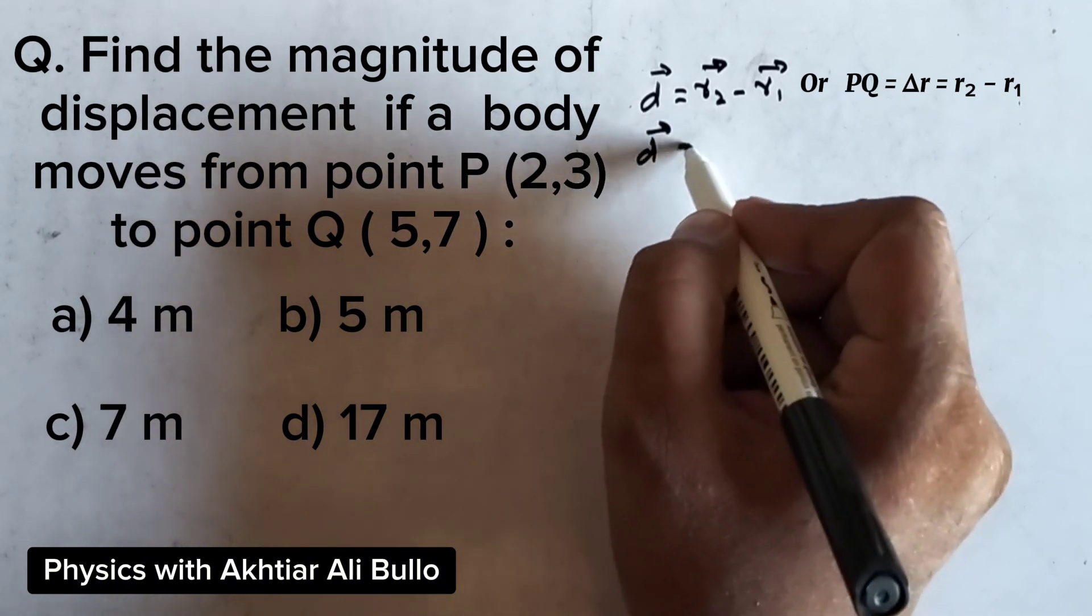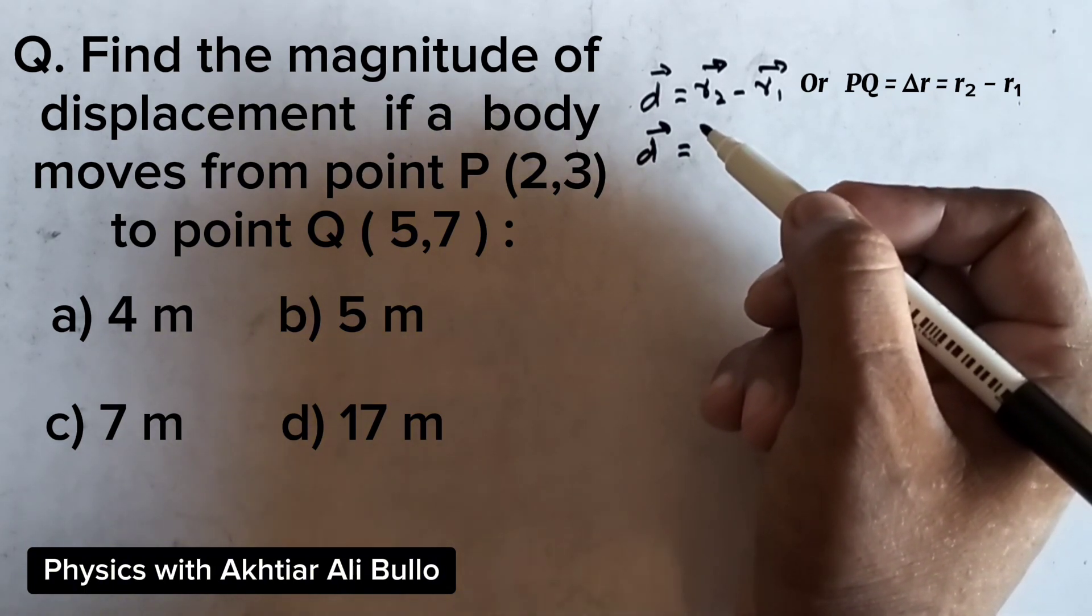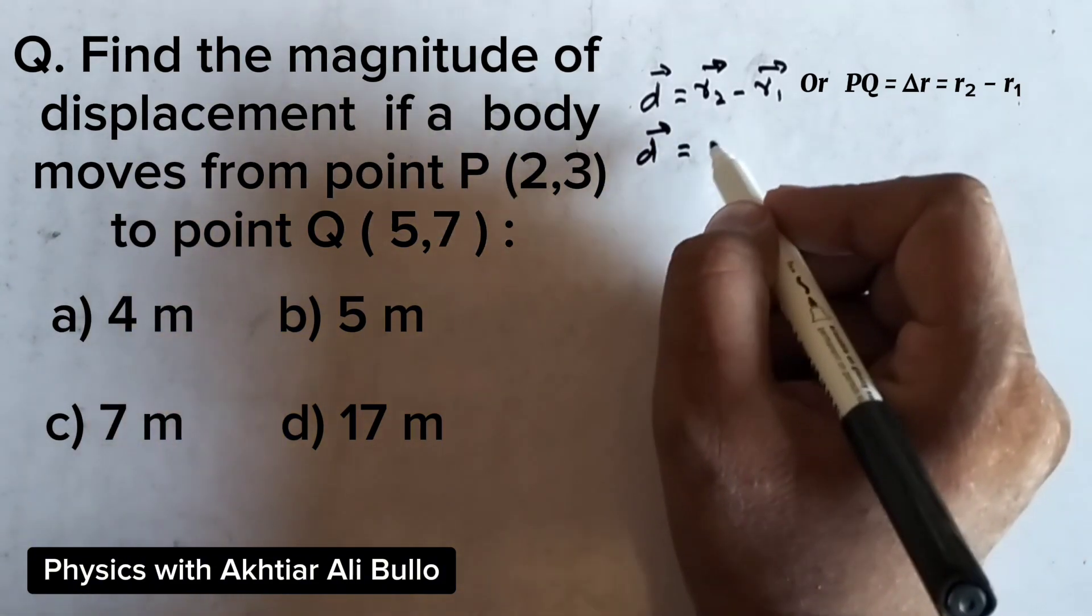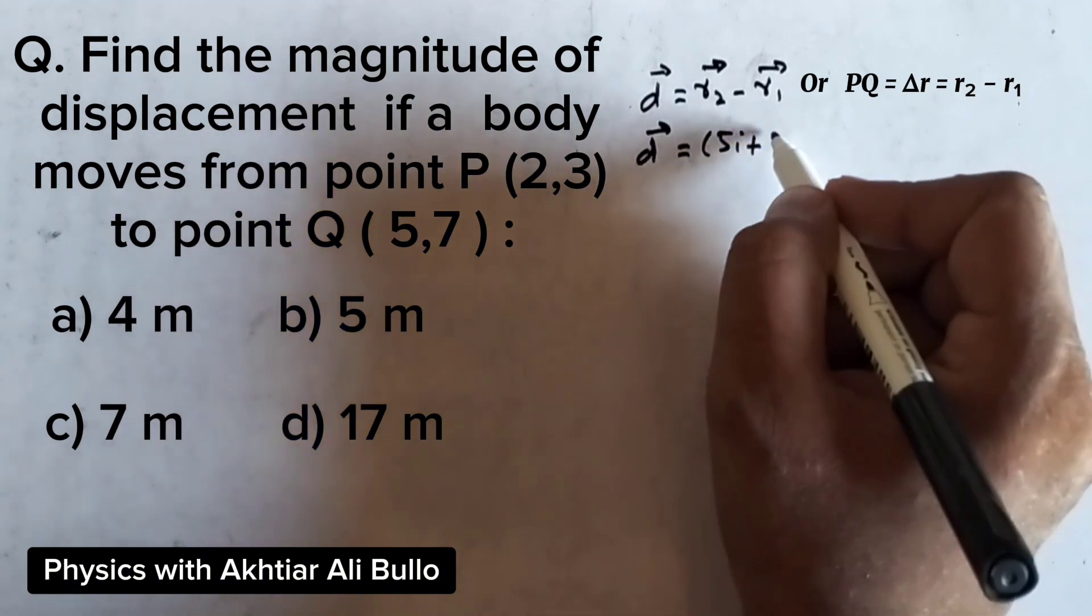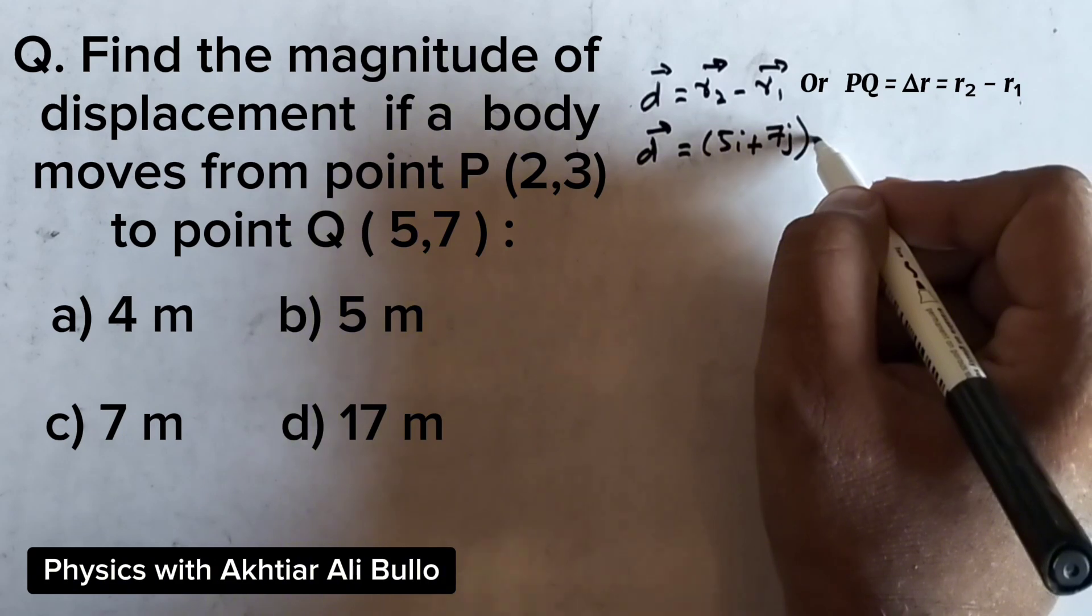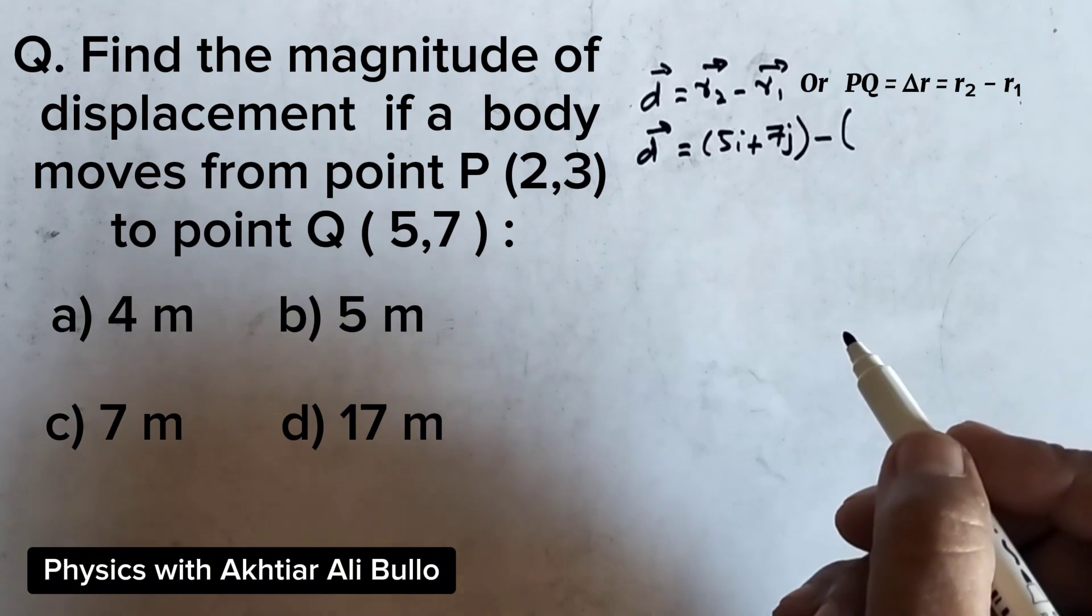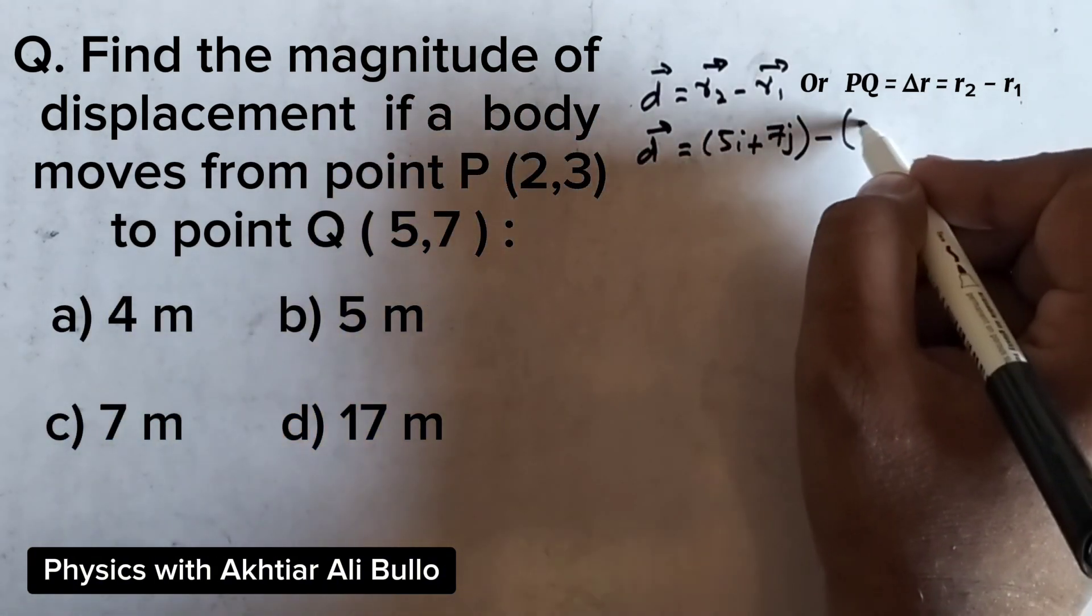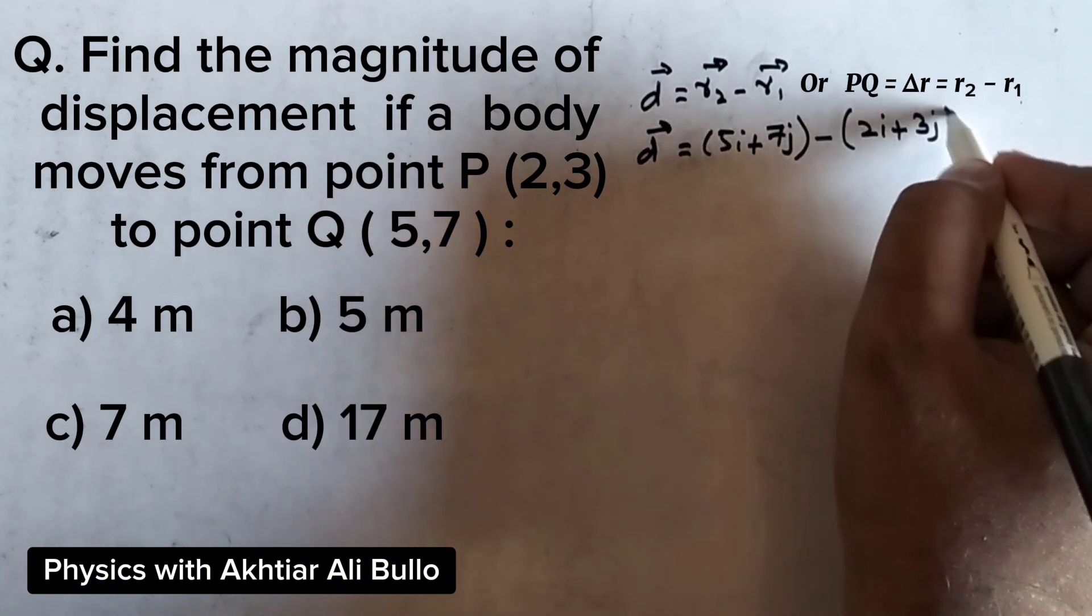Here R2 is (5,7), so it will be 5i plus 7j, minus R1 which is (2,3), means 2i plus 3j.